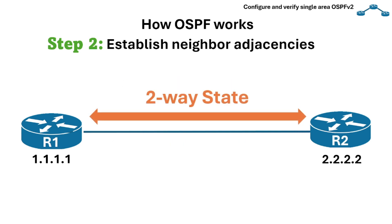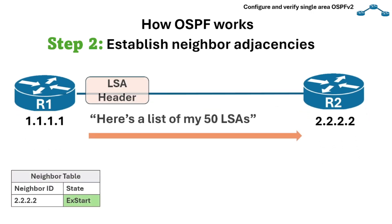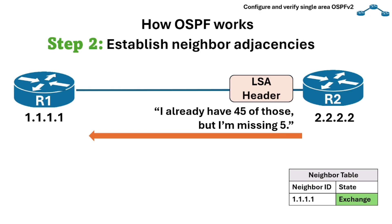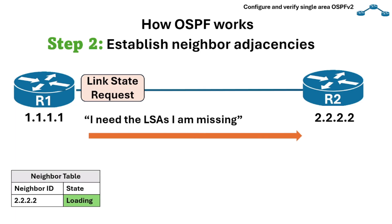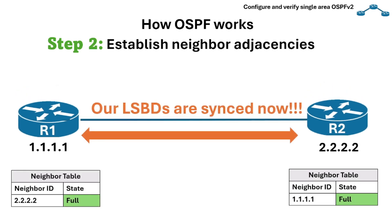When two routers reach the two-way state, they start syncing their network information, or the LSDB. Instead of sending the entire database, which is usually very large, they present each other a summary list of what they have. For example, R2 checks and sees that it has 45 LSAs but is missing five. R1 asks for those five missing LSAs using a link state request. R2 replies with the full details of those five LSAs in a link state update packet. After this exchange, both routers now have the same LSDB and move into the full state, meaning they see the network the same way.